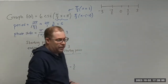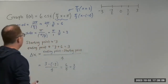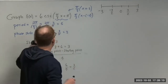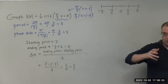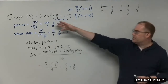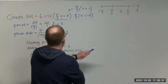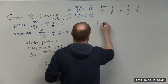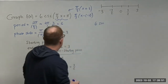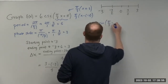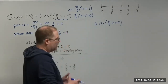Now we're ready to do the computations. We're going to take each of those points and plug them into the sine function — 6 times sine of (pi over 3 times x plus pi) — and then from there we can come up with the sketch. We'll graph the sine function first, and then take the reciprocal of those values to get the cosecant graph.